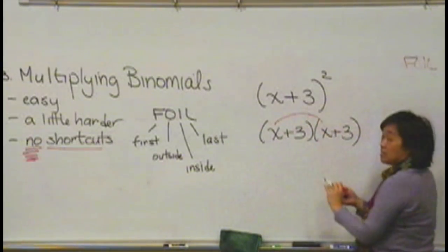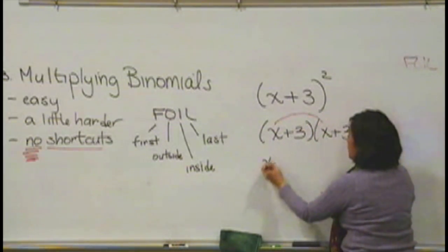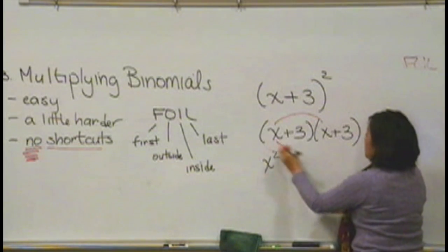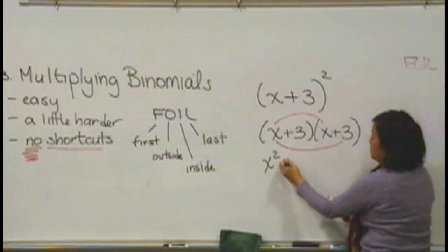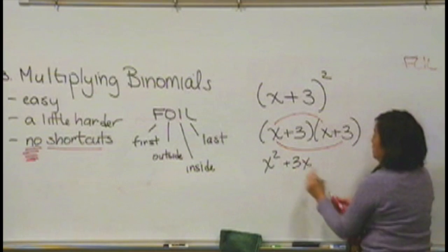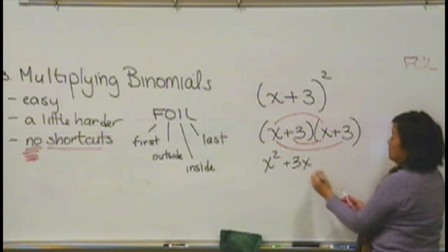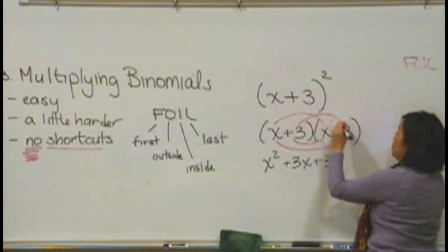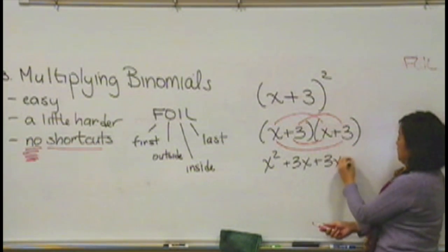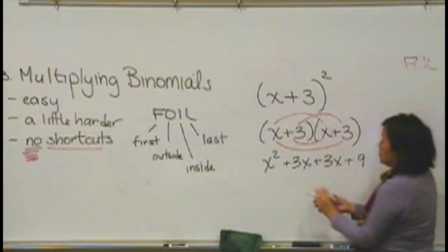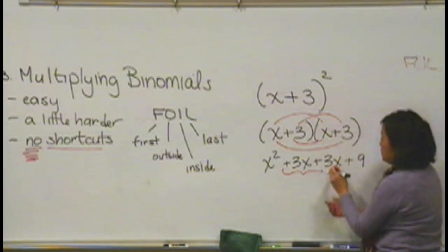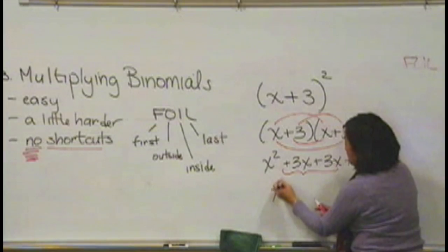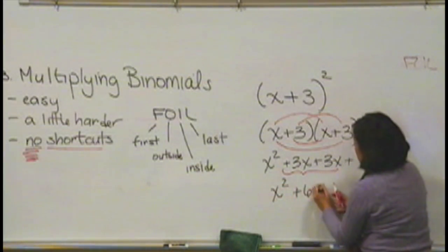So, the first ones, x times x is x squared. The outside ones, x times 3 is 3x. The inside ones, 3 times x is 3x. And then, the last ones, 3 times 3 is 9. And, what we should do is combine the similar terms in here. So, a final answer would be x squared plus 6x plus 9.